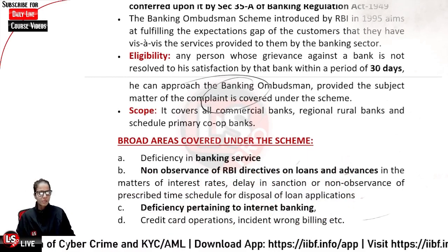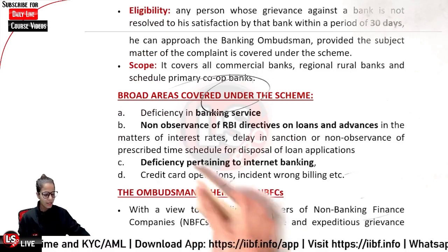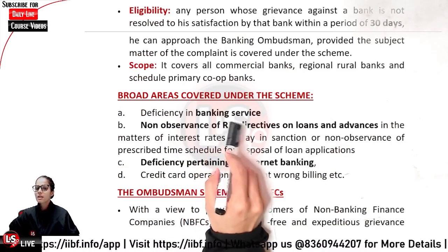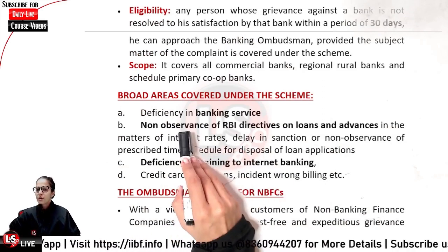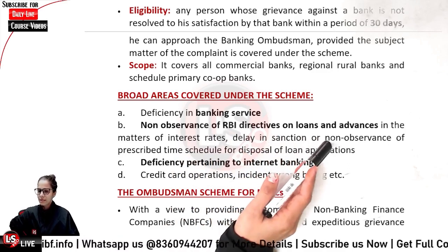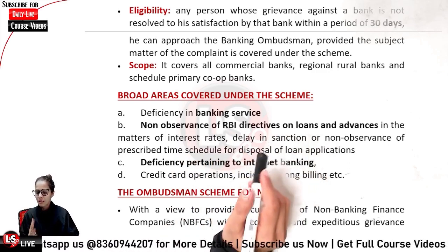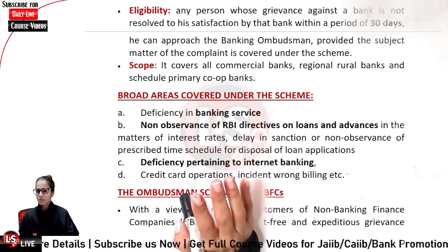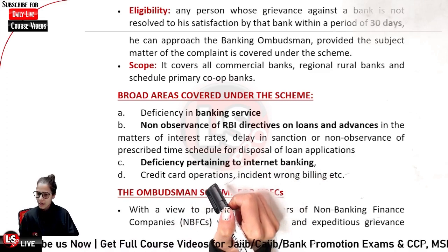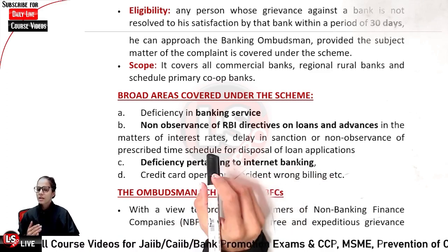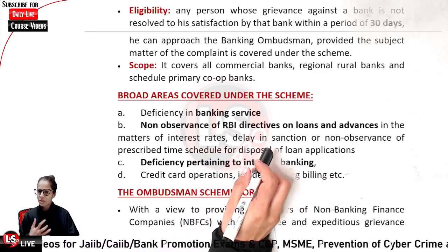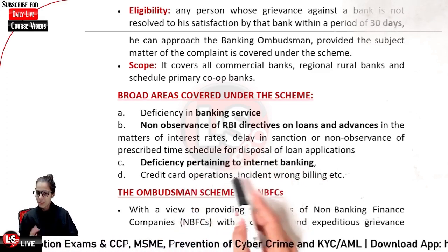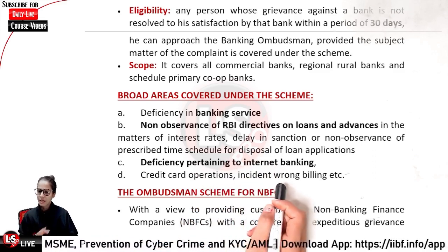The broad areas covered under the scheme include: deficiency in banking services; non-observance of RBI directives on loans and advances; issues relating to loan disposal timelines; if the bank does not follow guidelines you can go to the Ombudsman; deficiency in banking services; and deficiency pertaining to internet banking, credit card operations, and incidents of wrong billing, etc.